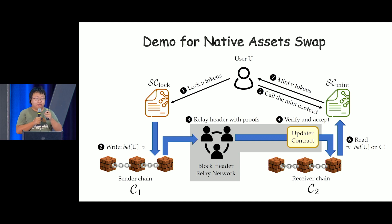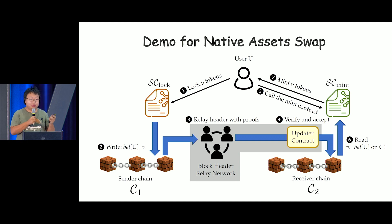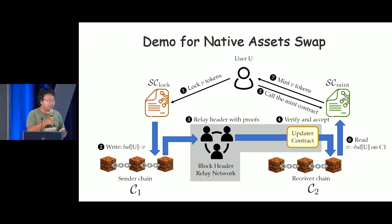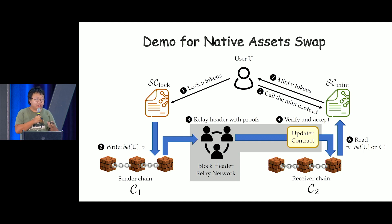The user monitors the receiver chain, and once the designated block header is written in the receiver chain, it issues a mint command to the mint contract. The mint command includes details about the transaction and a Merkle tree proof proving that such transaction is included in the block header. Once the Merkle tree proof passes and some additional checks pass, the mint contract mints tokens into the user's account.